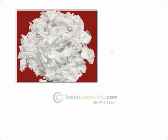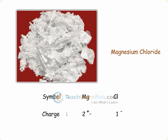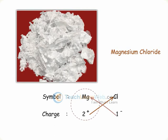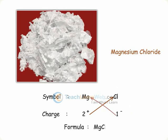For example, for magnesium chloride, the symbols are written first and their charges are crisscrossed. Mg has the charge 2 plus, and Cl has the charge 1 minus. The resulting formula is MgCl2.